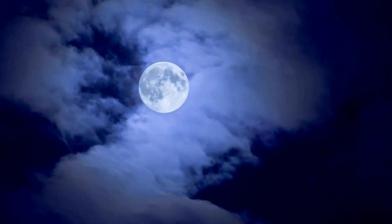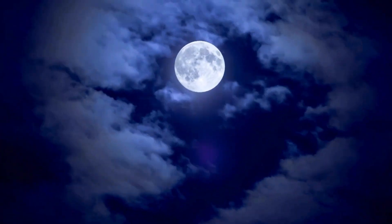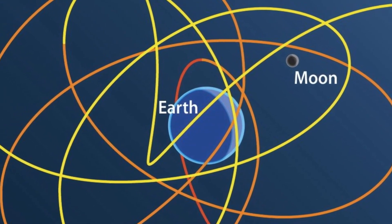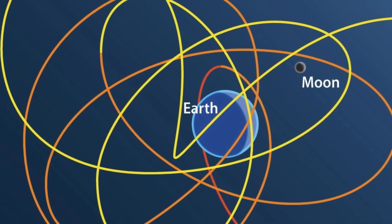In contrast to our moon, which maintains a stable orbit, mini-moons like PT5 follow highly elliptical trajectories. This means their paths are elongated and less predictable, contributing to the brief duration of their time spent near Earth.